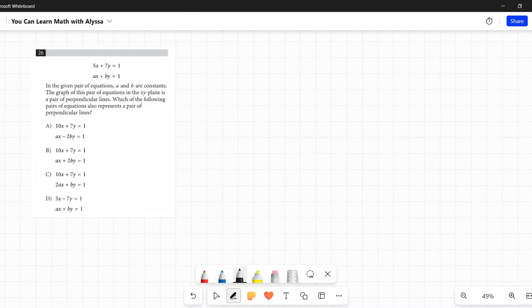Number 26: 5x plus 7y equals 1 and ax plus by equals 1. In the given pair of equations, a and b are constants. The graph of this pair of equations in the xy plane is a pair of perpendicular lines. Which of the following pairs of equations also represents a pair of perpendicular lines?